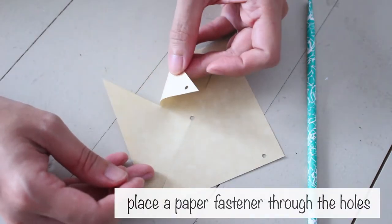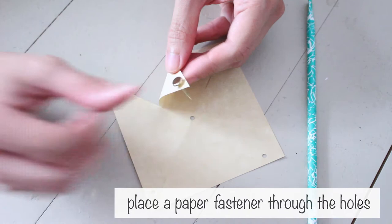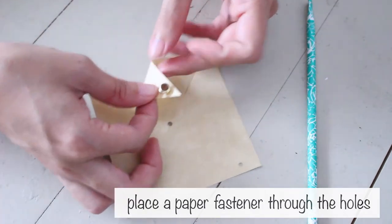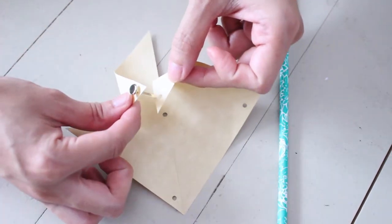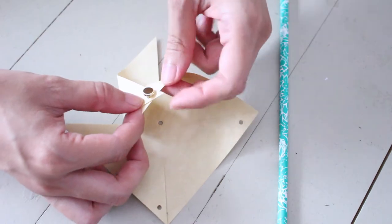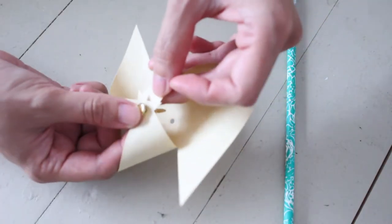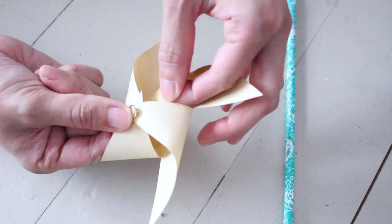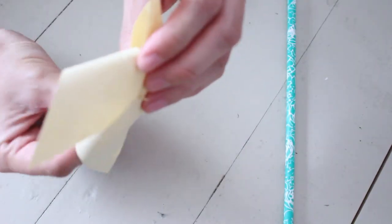Place the paper fastener through the corner holes, then through the center.